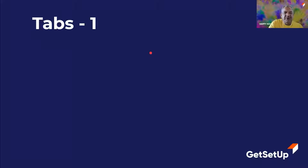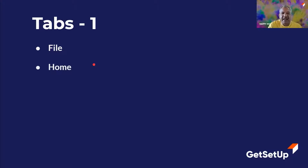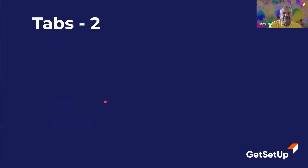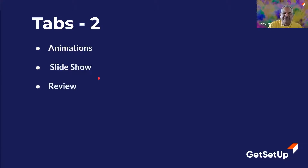A little bit of information about tabs — we will of course be exploring this when I do the demo. These are all in sequence: file, home, insert, design, transitions — these are all tabs which are there in the ribbon. After that we get to animations, slideshow, review, view — these are all tabs. And of course the last very important one being the help feature.